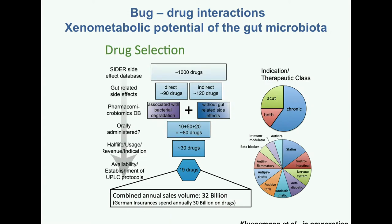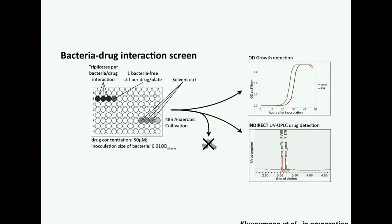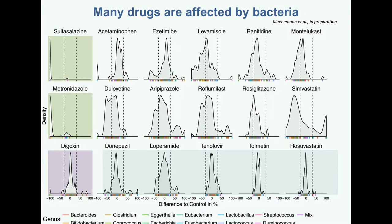We have in total 19 drugs covering many different classes with no chemistry filter — we tried to diversify whenever we can, with many different chemistries and therapy targets. The screen is conceptually very simple: you grow bacteria with the drug, measure the drug concentration at the beginning, and see at the end whether the drug concentration has decreased. One main conclusion, again quite surprising to me, is that many of the drugs are affected by bacteria — I think 12 out of the 19 drugs we looked into showed reducing concentration in the medium.